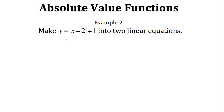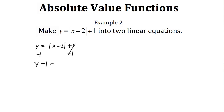Let's start by finding the two linear equations. If we're going to make this into two linear equations, the best way is to first isolate the absolute value. So with y equals the absolute value of x minus 2 plus 1, we subtract 1 from both sides, which leaves us with y minus 1 equals the absolute value of x minus 2.